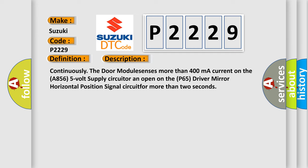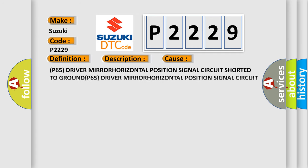This diagnostic error occurs most often in these cases: P65 driver mirror horizontal position signal circuit shorted to any circuit ground.